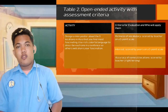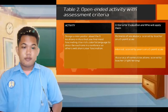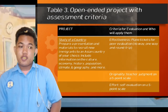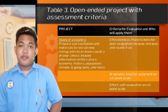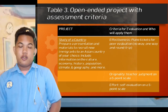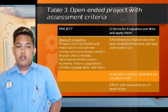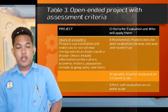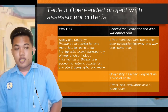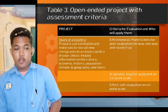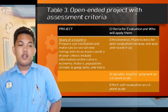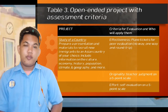In Table 3, it is an open-ended project with assessment criteria. Same as Table 2, they have two columns: the project and the criteria for evaluation and who will apply them.